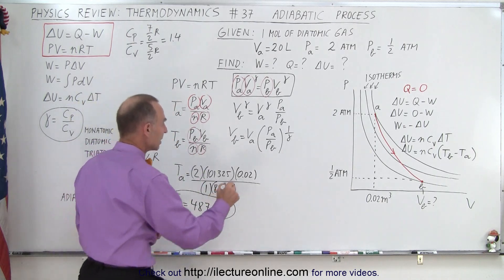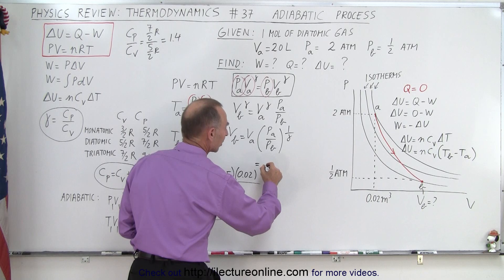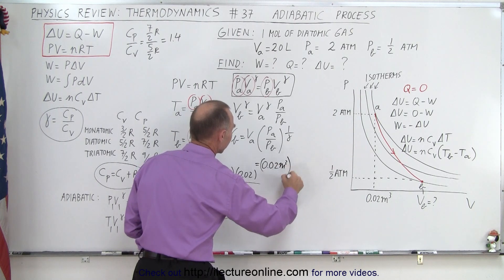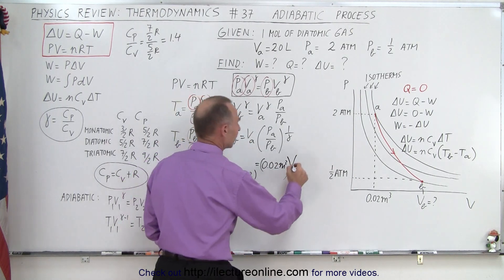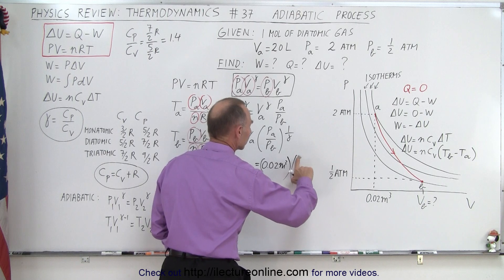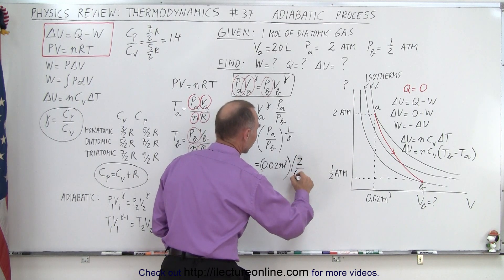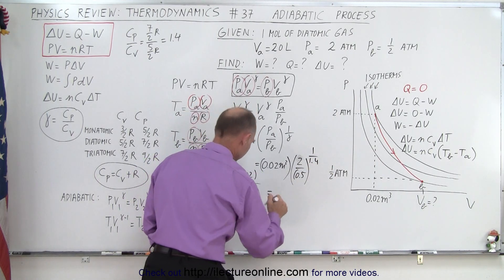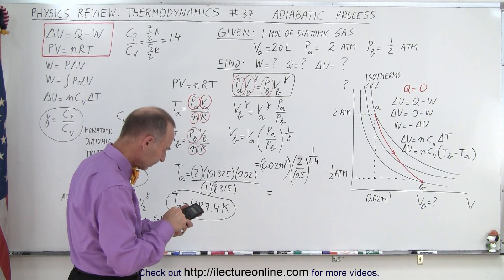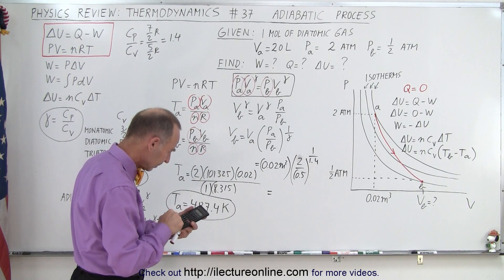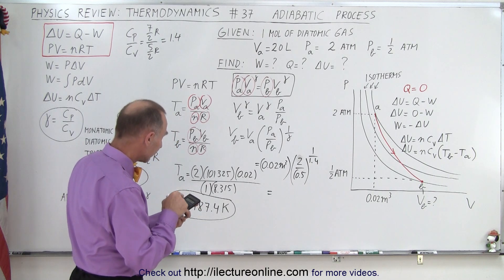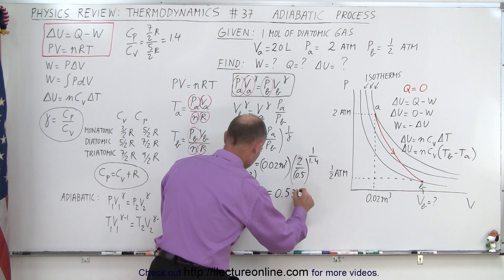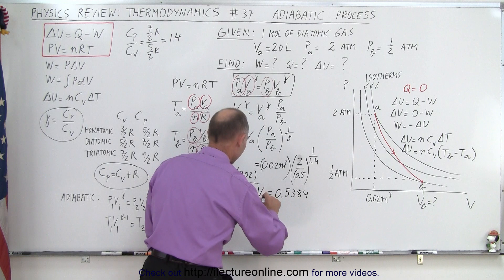Now we find volume at B, so this is equal to volume at A, which is 0.02 cubic meters, times the ratio of pressure at A, which is 2 divided by 1.5, raised to the 1 over 1.4 power. And with a calculator, times 0.02 equals, so that gives us 0.5384, that is V at B.